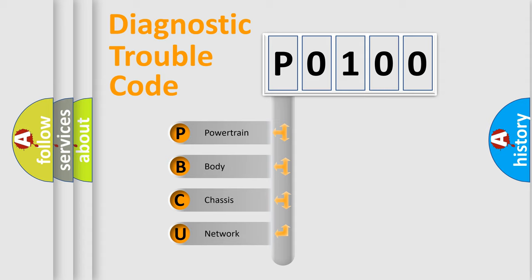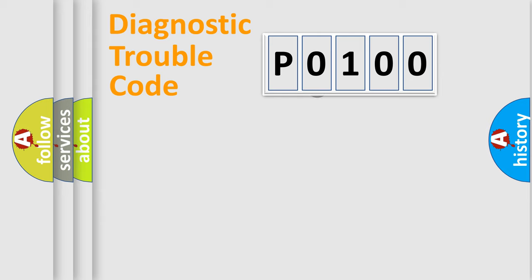We divide the electric system of automobile into four basic units: Powertrain, Body, Chassis, Network. This distribution is defined in the first character code.